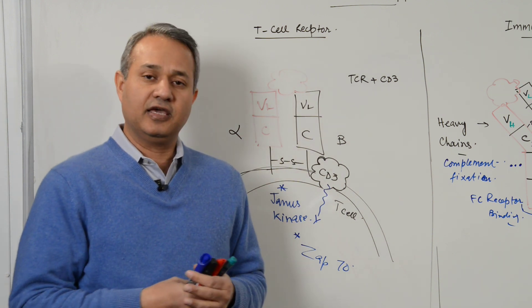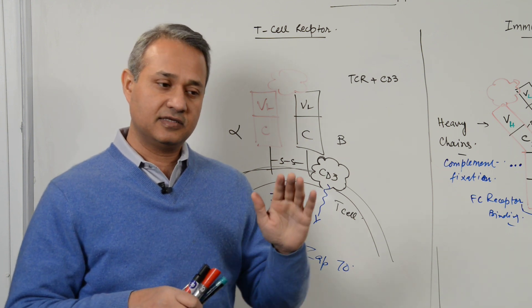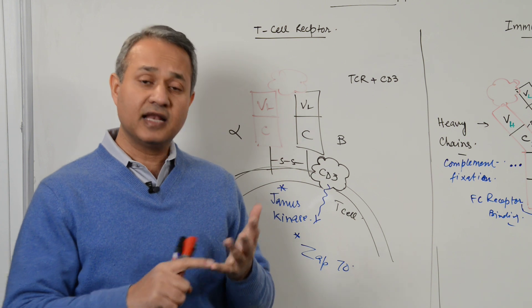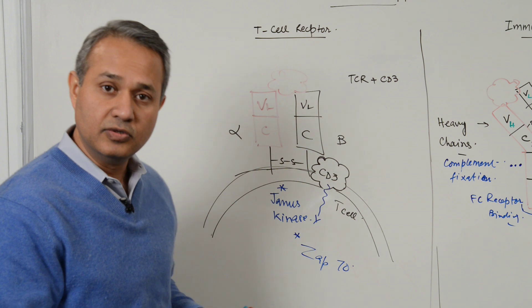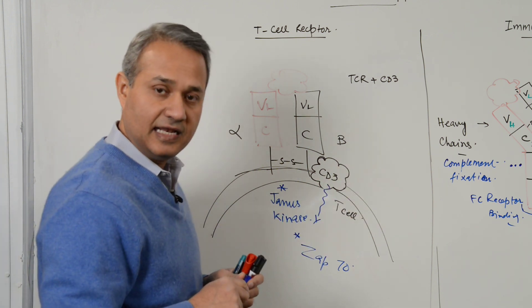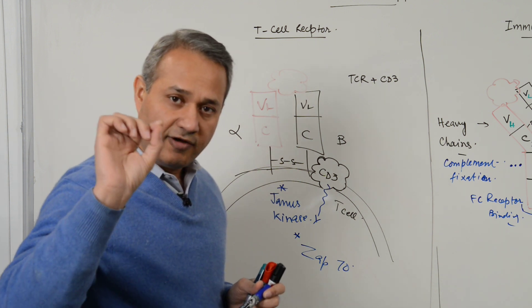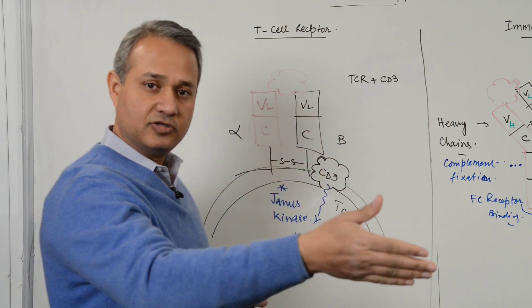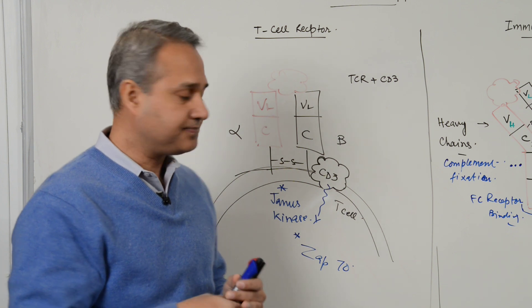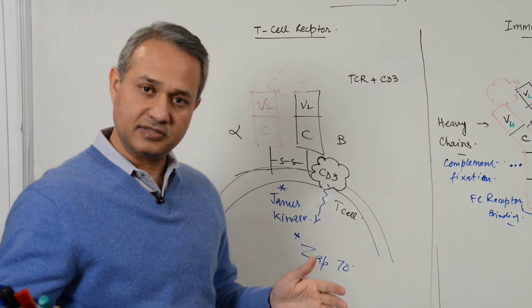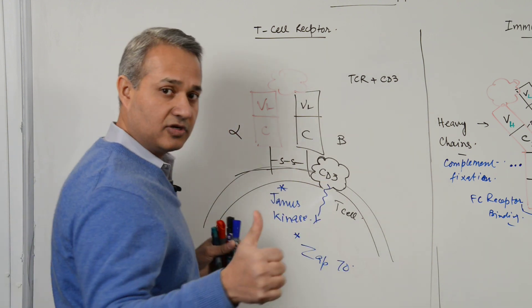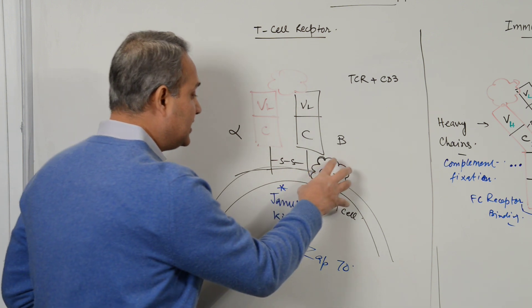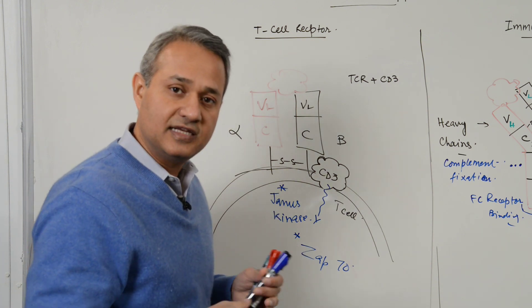SCID — severe combined immunodeficiency disease — has many pathogenic origins. One way is that T cells and B cells are absent. The most common cause in the US is that the interleukin-2 gamma chain is defective, preventing cytotoxic T cell activation. CD3 defect, Janus kinase defect, or ZAP70 defect can each also cause SCID — a CD3 defect leads to downregulation or non-functioning T cell receptors.